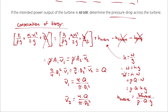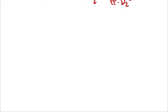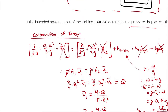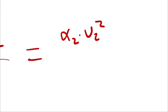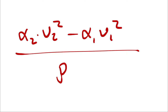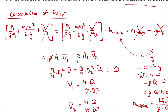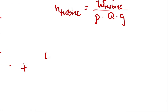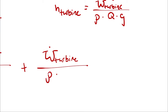Let's hopefully do it correctly. I'll break it out into multiple steps because we have infinite space. p1 minus p2 divided by density times gravity equals alpha-2 times V2-squared minus alpha-1 times V1-squared, divided by 2 times gravity, plus power of the turbine divided by density times volumetric flow rate times gravity.